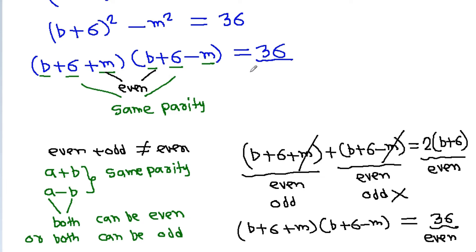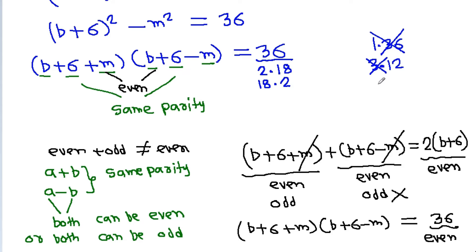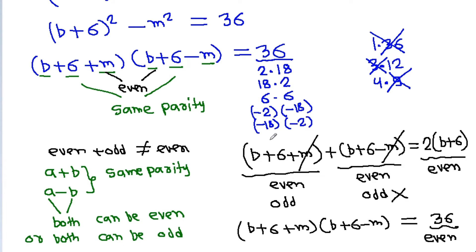So 36 is expressed as a product of two even numbers. The valid even factor pairs are: 2×18, 18×2, 6×6, and the negative pairs: (−2)×(−18), (−18)×(−2), and (−6)×(−6). Factor pairs like 1×36, 3×12, and 4×9 are excluded because they contain odd numbers.